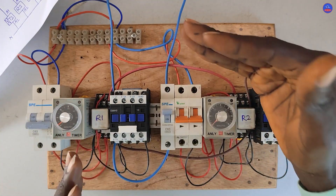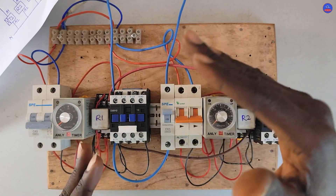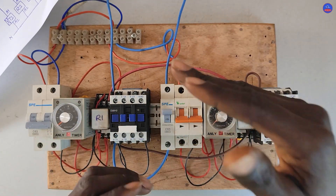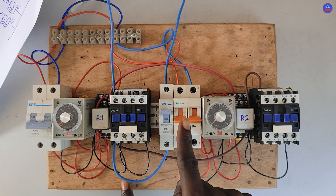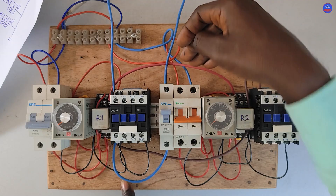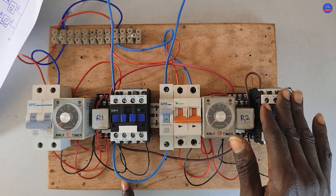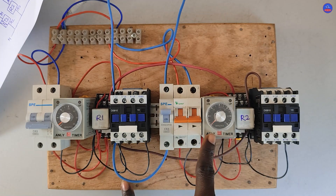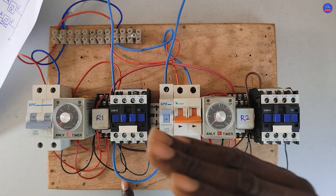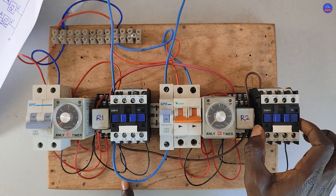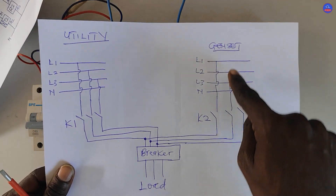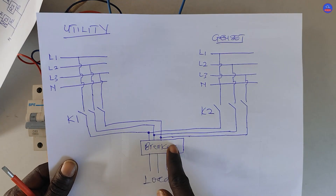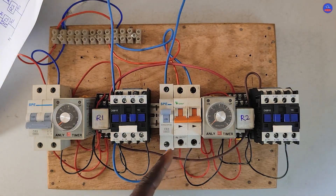When the genset starts and the voltage is okay — we get enough 230V or enough single-phase voltage — power will be applied to the control circuit. The moment we turn on the breaker, it is assumed that the generator power is available at the control side. Therefore this timer would energize and start to count. After the preset time, this contactor would energize and this contact would close, therefore the generator power will be applied to the load.